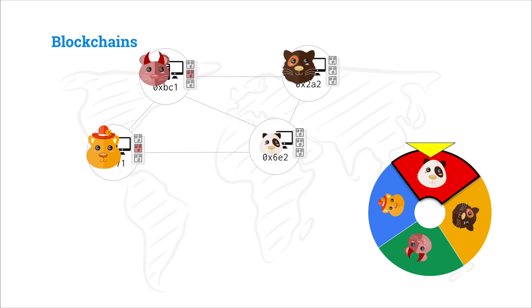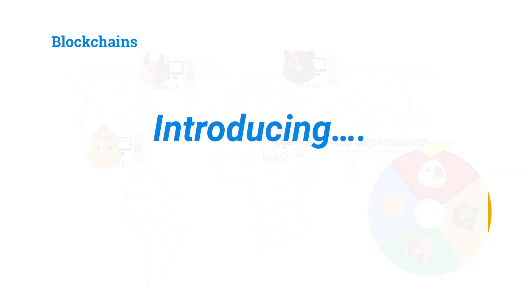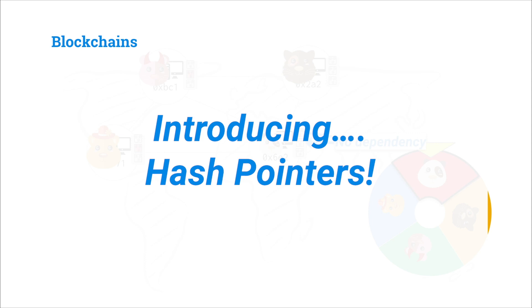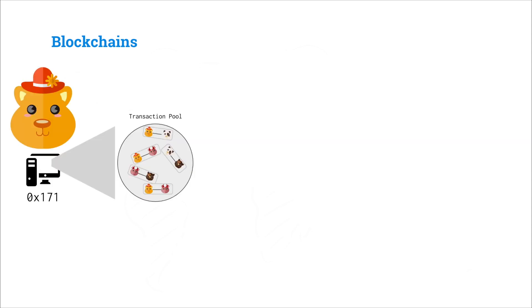The big problem here is that there is no dependency between one block and the block before it. Everyone was able to accept that third block even though they all have different versions of history for the second block. We can solve this by introducing hash pointers, which is just a pointer to some data along with a hash of that data so that data can't be altered. Let's run through an example.